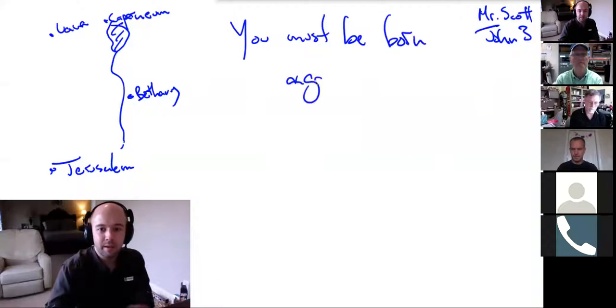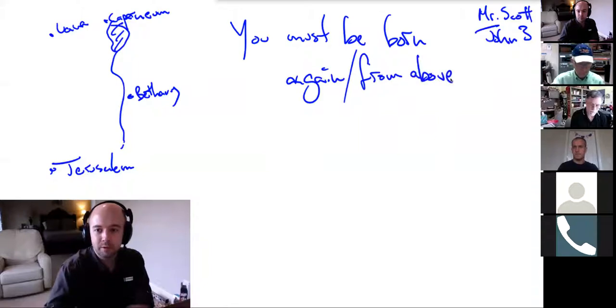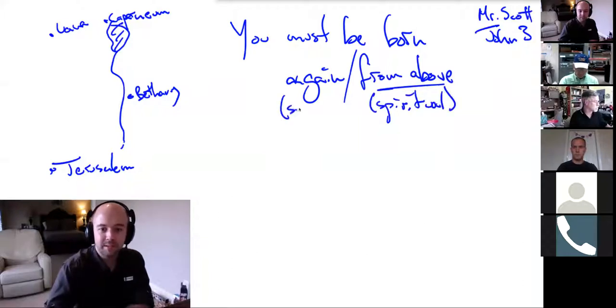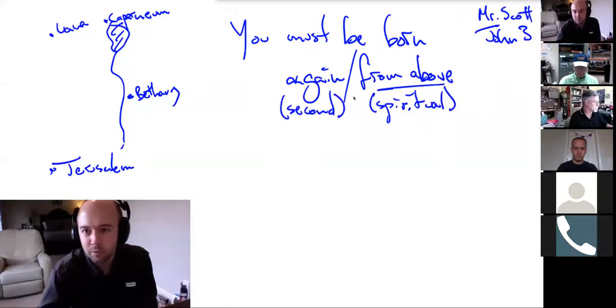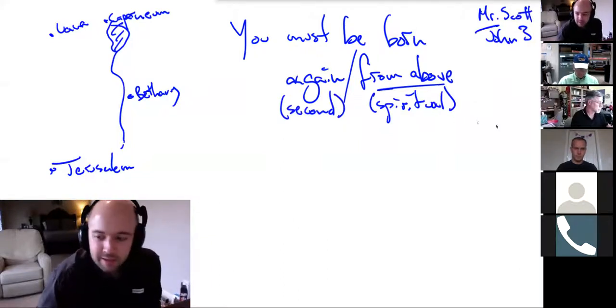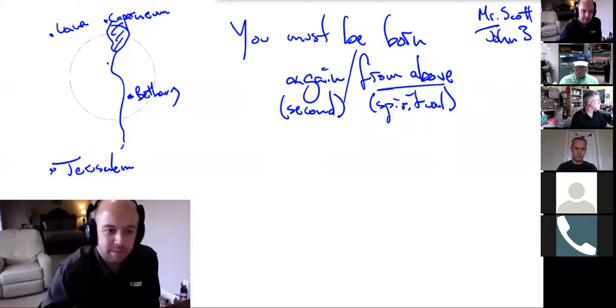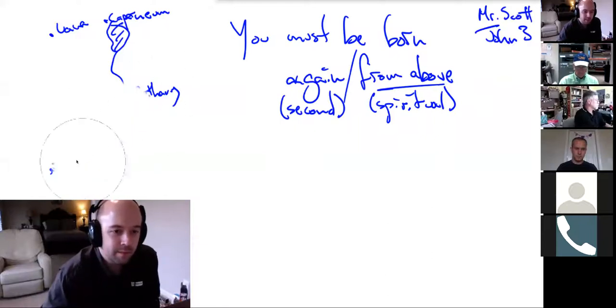He immediately talks to him about being born again. You must be born again. Born again. And the Greek there is intentionally ambiguous. It can also be interpreted born from above. There's a spiritual context here. There's also a second context here. It's a second birth. It's a spiritual birth. And Nicodemus does not get it. We talked a lot about that last week.